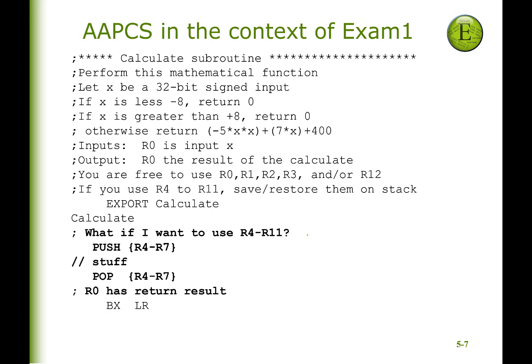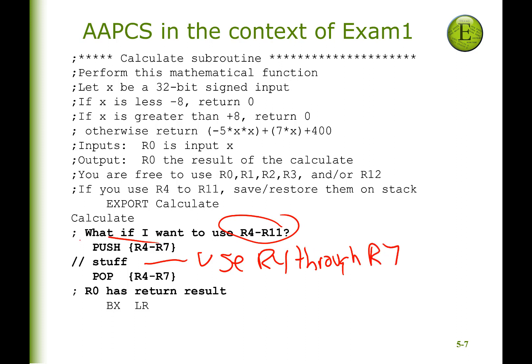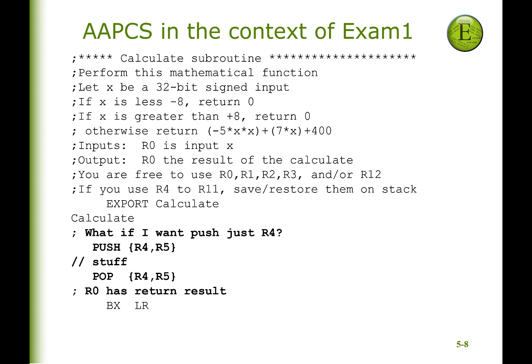On the other hand, what if I want to use R4, R5, R6, and R7 — that protected range? You can use them, but you have to save them at the beginning and restore them at the end. R4 through R7 have to be restored. If you don't follow that rule, the grader crashes and nobody gets any points. What if I want to use just R4? That's the weird rule: if you want to push, you push in pairs. So if I want to use just R4, I push R4 and pop it off, but I also pick another register and push it as well, then pop both to balance — maintaining the even number of registers pushed.